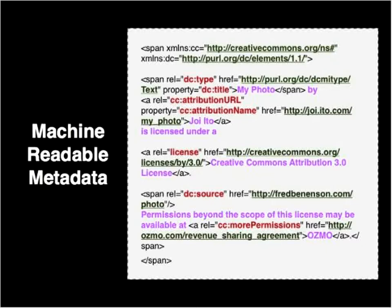For software, the free and open source software movement started before Creative Commons — Creative Commons came out of that, in a way. For software, there's a whole host of other licenses. Do not use Creative Commons licenses for software. It's only appropriate for content that is not software and can be put into a tangible medium.